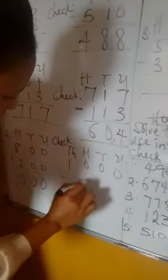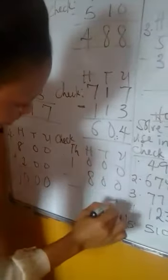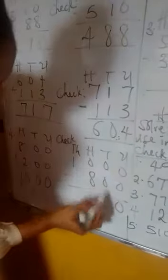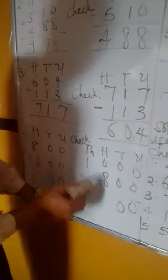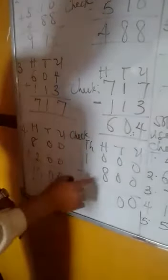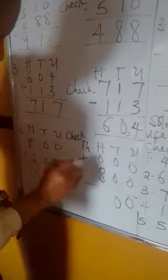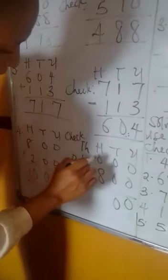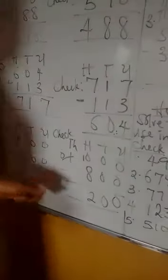That is 1000 minus 800. 0 minus 0 is 0, 0 minus 0 is 0, 0 minus 0 is 0, 0 minus 8. 0 cannot subtract 8, so we are going to take a number from here. If I take 1 from here, it remains 0. Put here, it becomes 10. 10 minus 8 is now 2. So you can see I have gotten back my answer, 200.